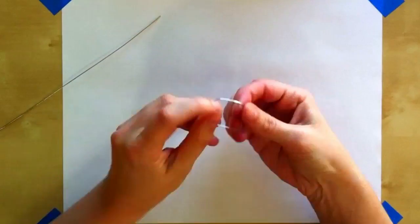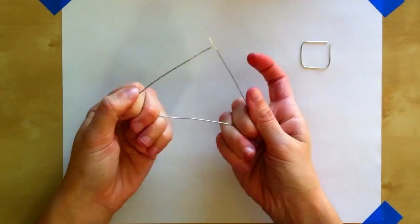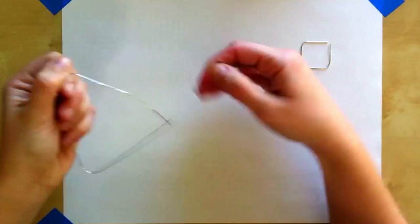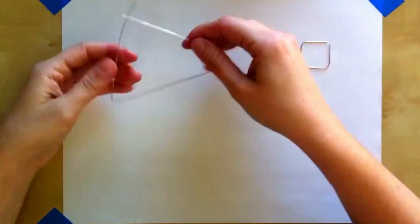You'll notice that you get a different total area every time, depending on where you cut the wire, and which piece you use to form the triangle, and which piece you use to form the square.